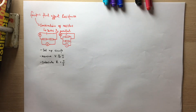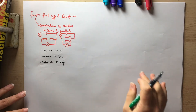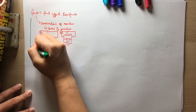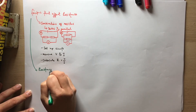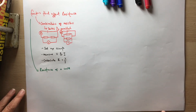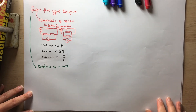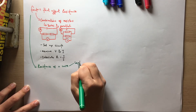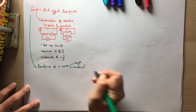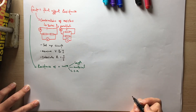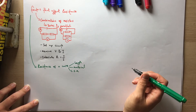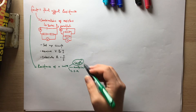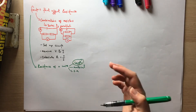The main practical about factors that affect resistance is the resistance of a wire. This is the one most commonly asked about in required practical questions. There are various factors you could investigate: the length of the wire, the material it is made from, and the cross-sectional area — using wires of different diameter. Length is the main factor they ask about, but any of these could come up.